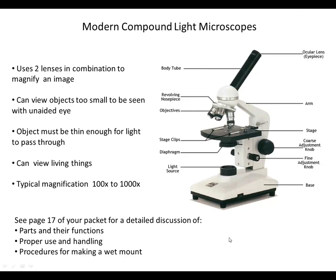That's a quick rundown on the parts of the microscope and what they do. Our job over the next couple of days is to make sure you know how to use the microscope appropriately. On page 17 of your packet there's a detailed discussion of the parts and functions, proper use and handling, and procedures for making a wet mount. We're going to begin working on a lab practicing the microscope, and when we're done we'll turn our attention to the electron microscope and the stereoscopic microscope. Make sure you've written down any questions, bring your notes to class, and we can discuss them there. This is Mr. Gales signing off — see you in class!